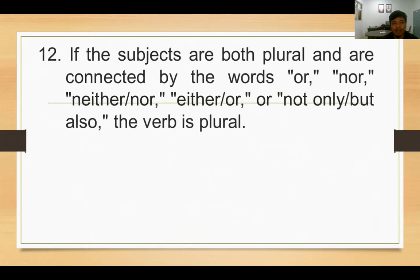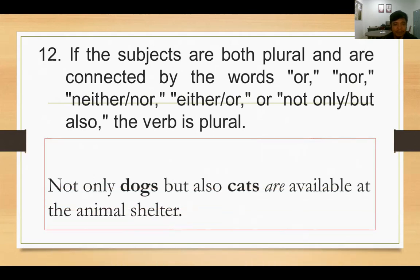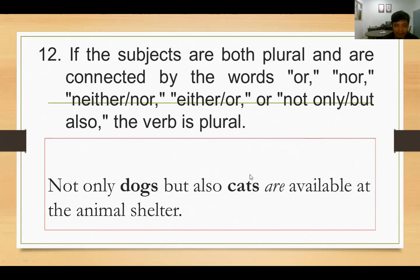Number twelve: if the subjects are both plural and connected by the words or, nor, neither...nor, either...or, or not only...but also, the verb is plural. Contoh: 'Not only dogs but also cats are available at the animal shelter.' Karena dogs plural dan cats plural, maka verbnya dalam bentuk plural: are.